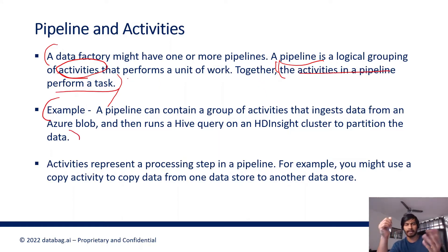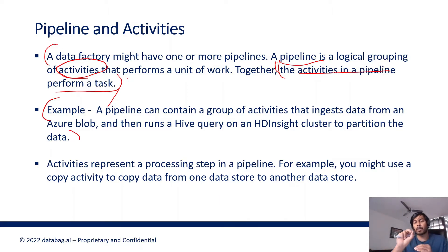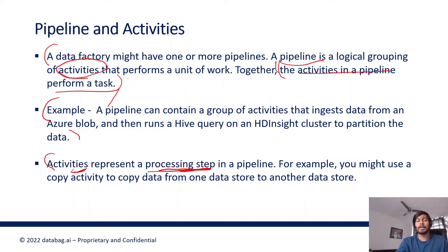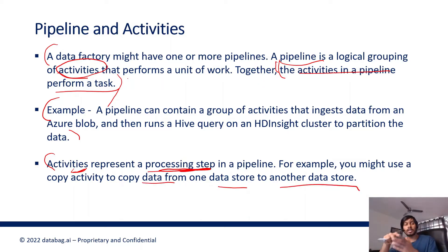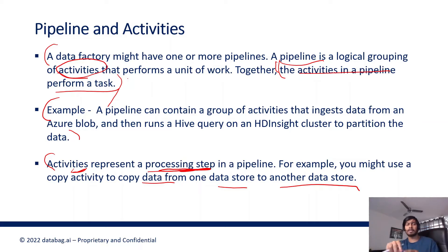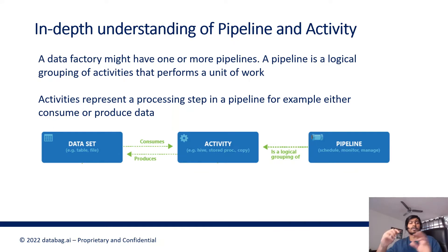Together, the activities in a pipeline perform a task. Activities represent a processing step in a pipeline — that's an important concept. For example, you might use a copy activity to copy data from one data store to another. The copy activity does the copy job — you're copying something from one location to another. You create a pipeline, maybe called 'copy data pipeline,' and within the pipeline use an activity called copy activity, which does the actual job.